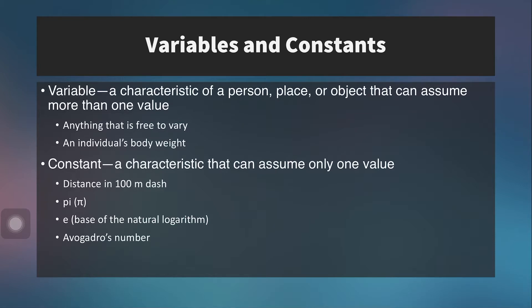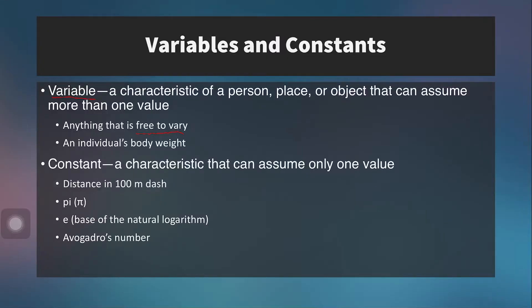In any research study we have variables and constants. A variable is a characteristic of a person, place, or object that can assume more than one value — anything free to vary, like body weight, strength output, forearm girth, number of repetitions, mile run time, or VO2 max. A constant is the opposite: it assumes only a single value, such as a person's age, body weight at a single time point, sex, the distance in a sprint test, or a mathematical constant like pi.